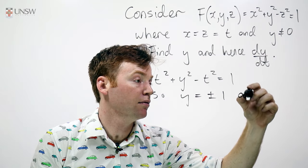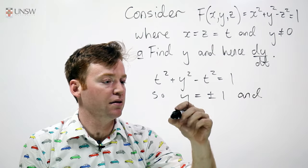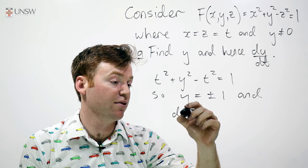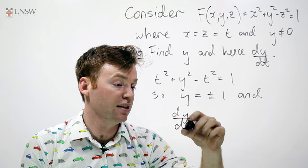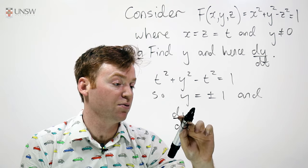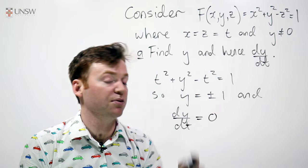And I can take the derivative of that with respect to t. I could do that all day. dy/dt of a constant, whether it's plus or minus 1, doesn't matter. That's always equal to 0.